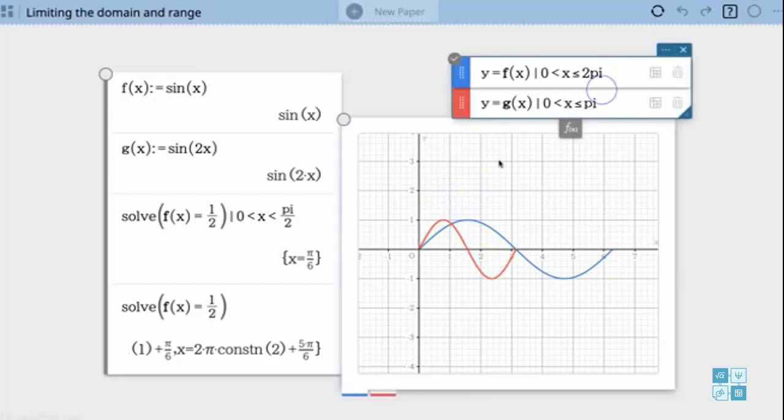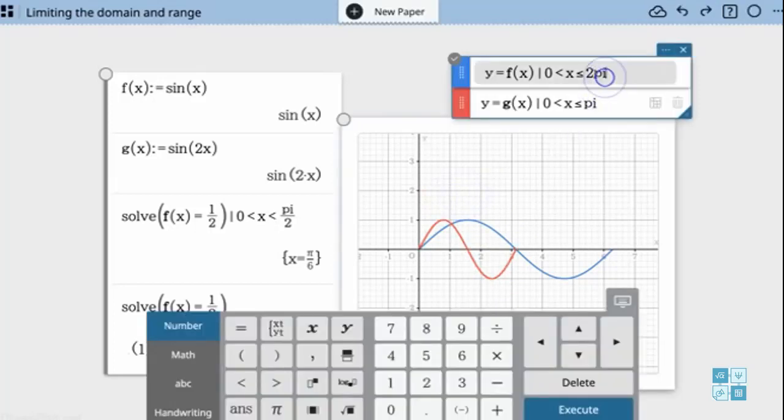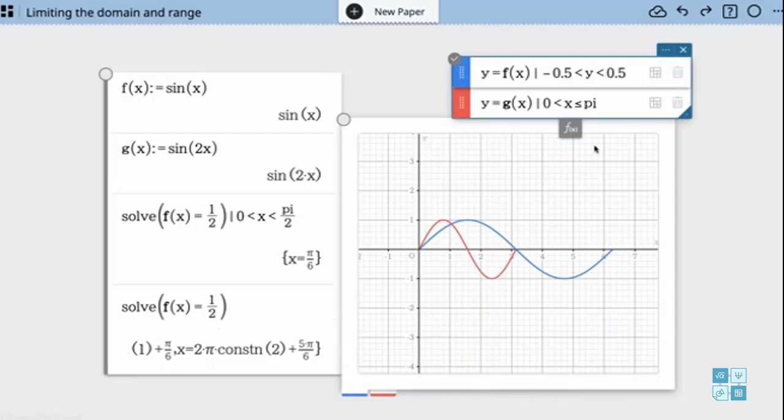Now this time let's limit the domain and the range because you're going to actually limit the range as well. So instead I'm going to limit my range on my original function. I'm going to limit it between negative 0.5 which is less than y and less than 0.5. Between a half and negative a half just on the y. So now when I graph it I get just the parts that are within that range.